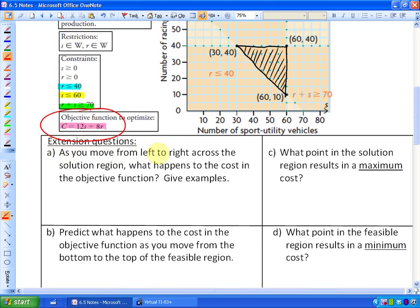Here's the first question. It says, as you move from left to right across the solution region, what happens to the cost in the objective function? So let's just take two points for example. Let's just take this one and then this one here. It shouldn't shock you that the orange point, which is 40 sport utility vehicles and 40 race cars, so the cost would be 40 sport utility vehicles. So $12 times 40 sport utility vehicles plus $8 times 40 SUVs. And that would end up being $480 plus $320. And that is $800. That would be the cost.